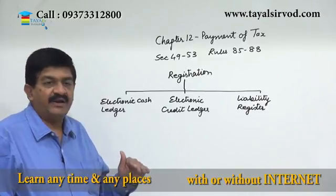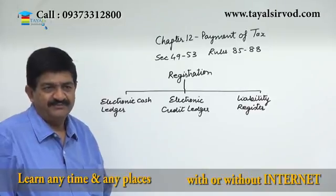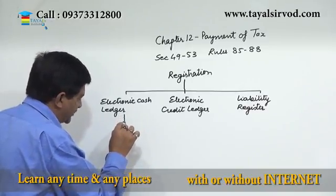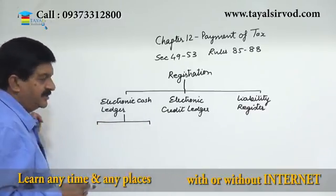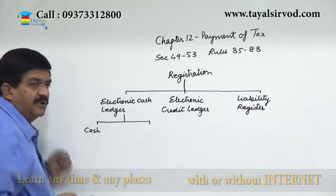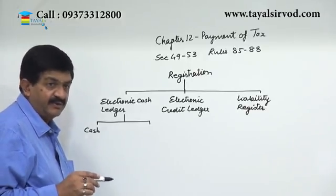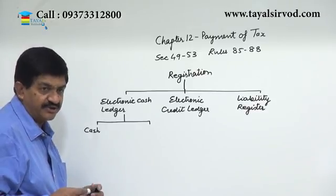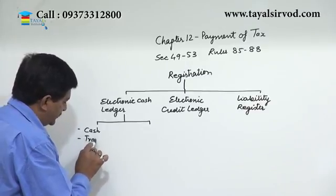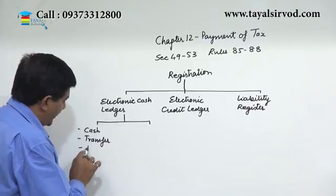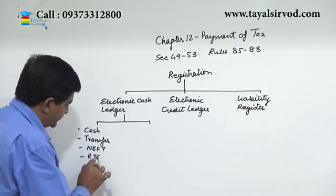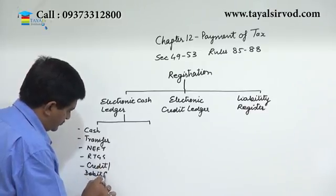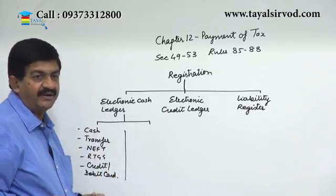Taxes can be paid either out of credit or out of cash. The cash ledger can be credited in two ways. You can deposit cash — though cash deposits are limited to not more than 10,000 per tax period. Alternatively, it can be a direct online transfer, NEFT, RTGS, or through credit or debit card. That is one way of crediting the cash ledger.